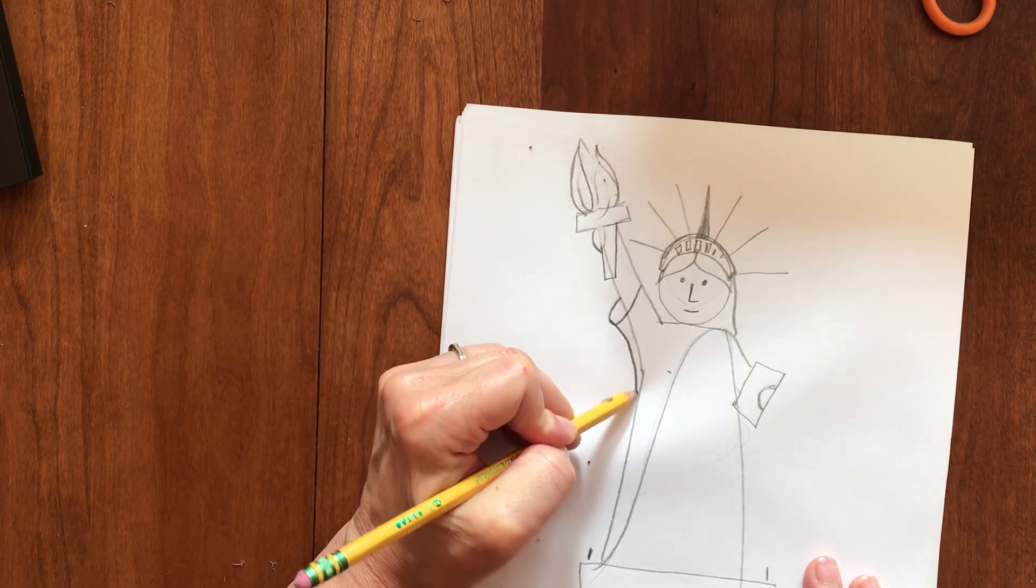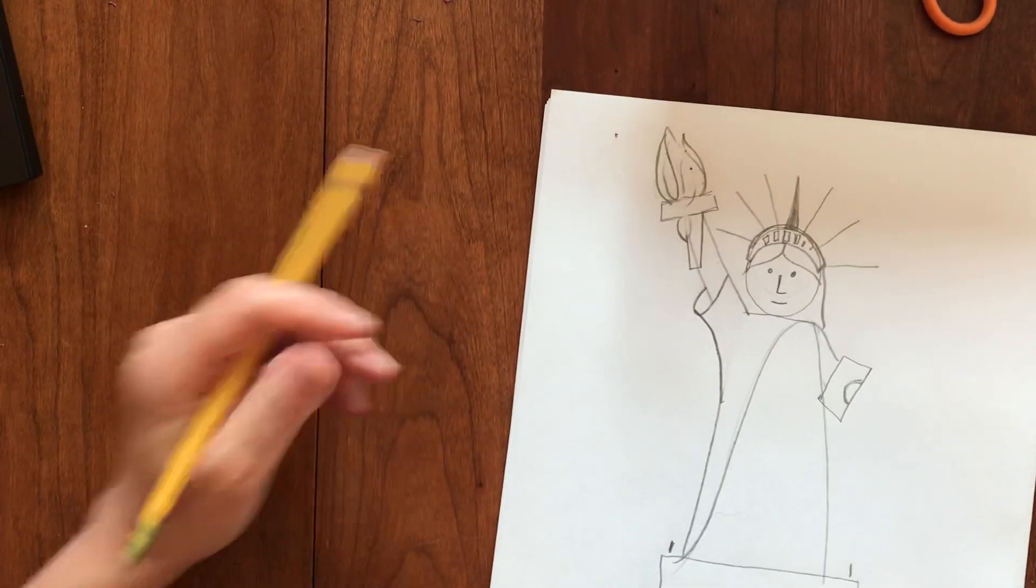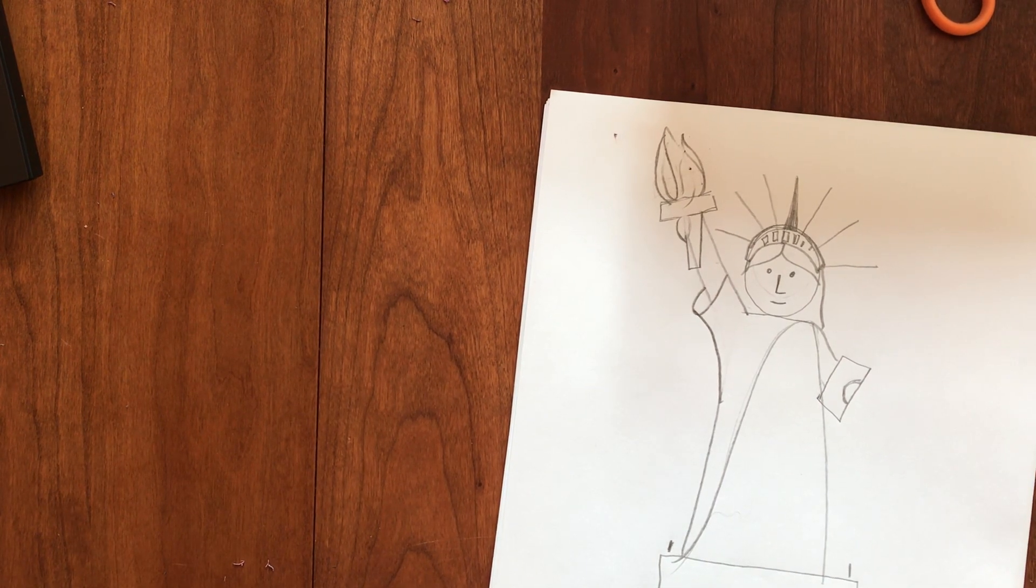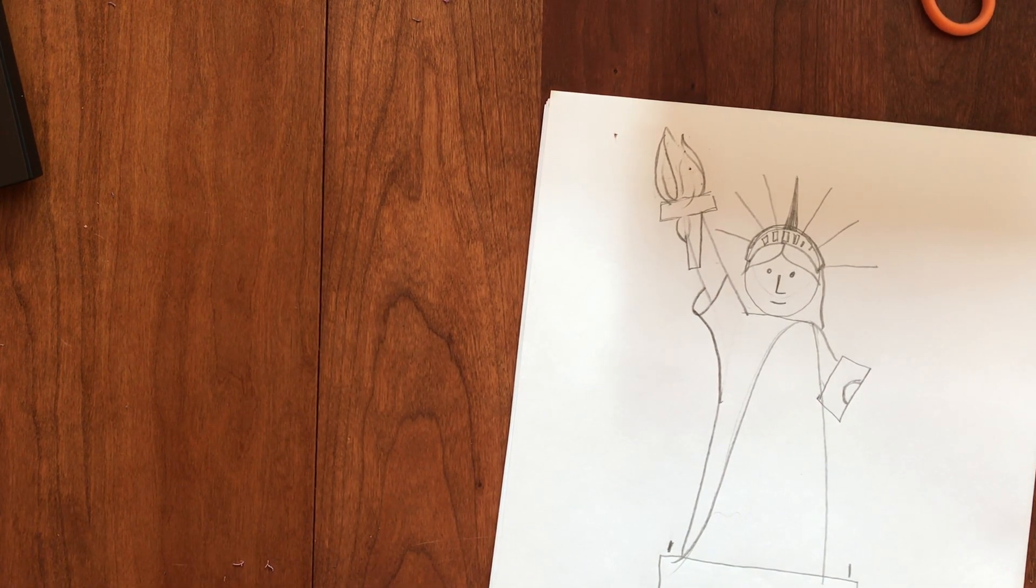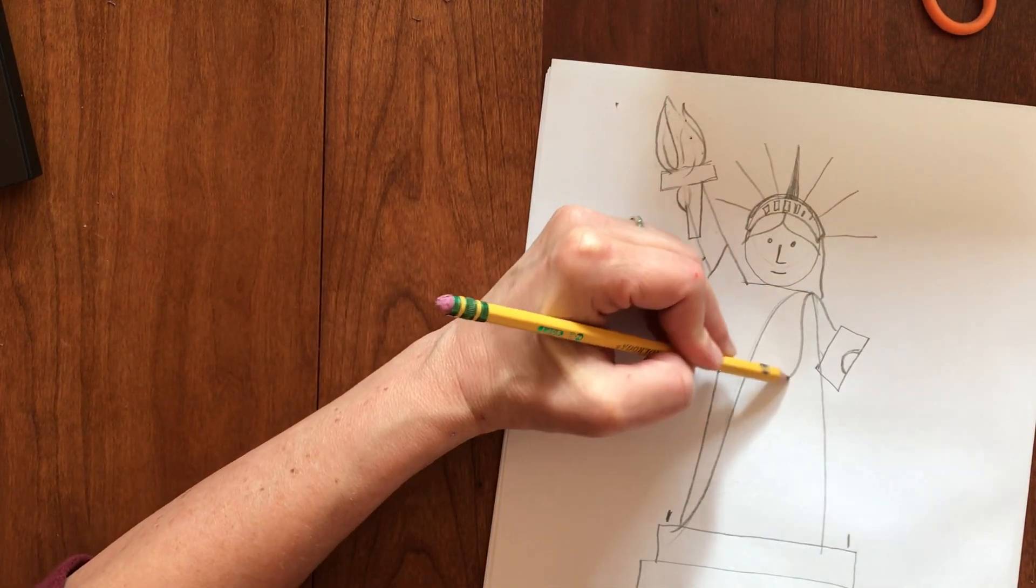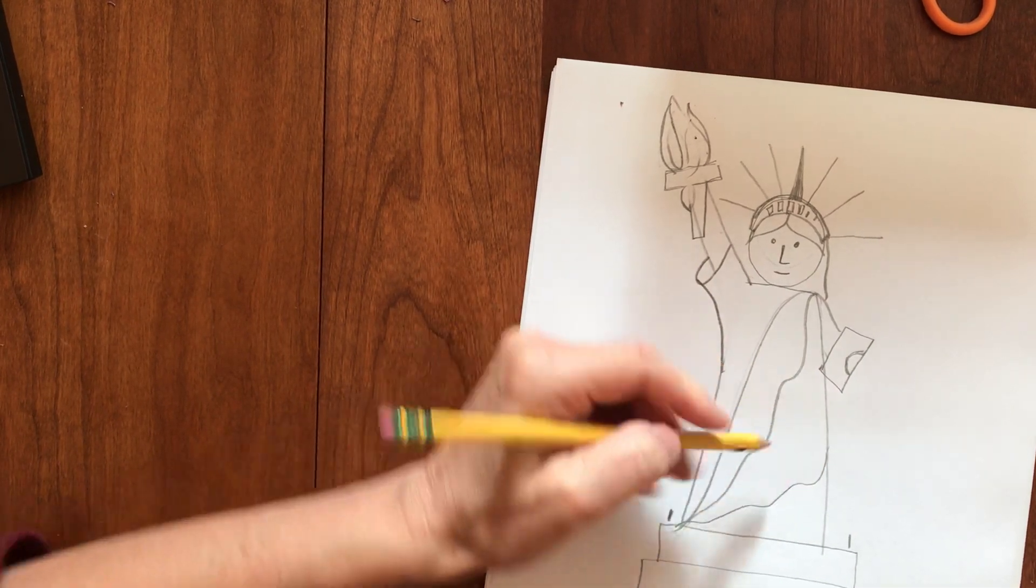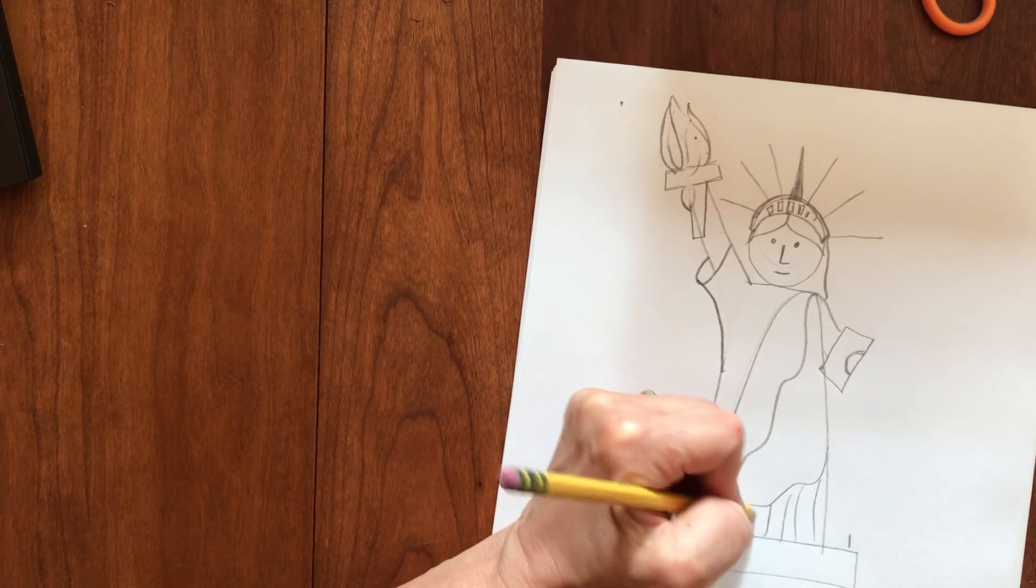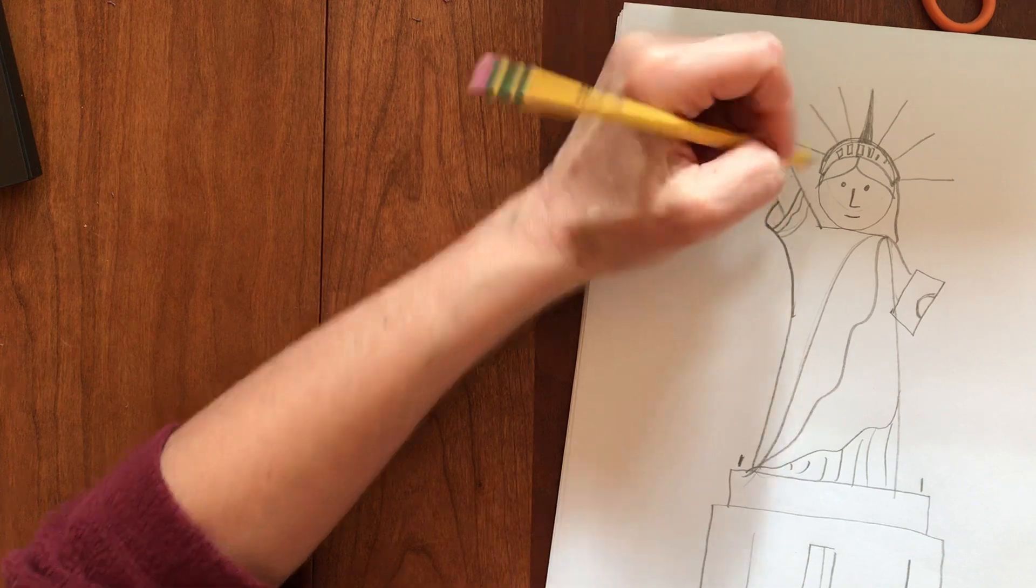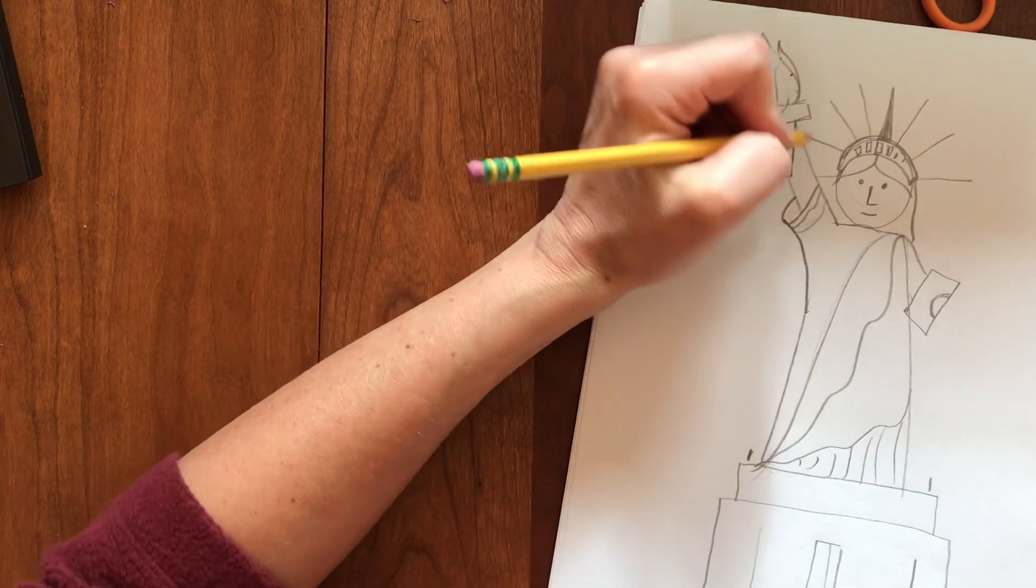Then you erase there and again, this is when you're going to be looking at the close-up inside of the slideshow to get more details, like how does the robe flow, how many layers do you see. You don't have to be exact, but I'm just doing kind of what I think I see. This is bunched up there. Anyway, I think you get the idea.